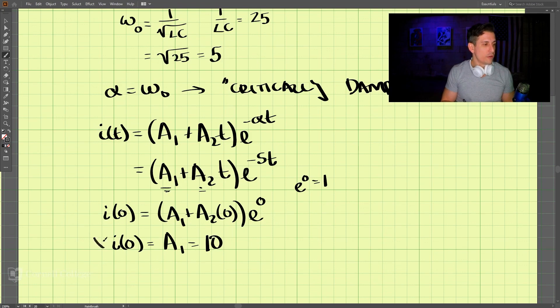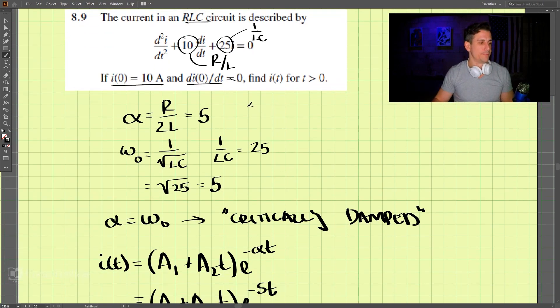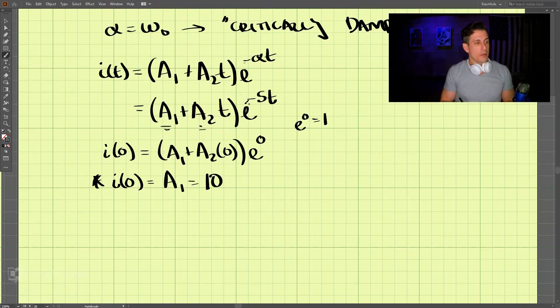Now, so that's one value that we have. And now we need, we know di/dt at time 0 is 0. Okay, so let's start with this and we're going to go di/dt and we're going to take the derivative of this equation here.